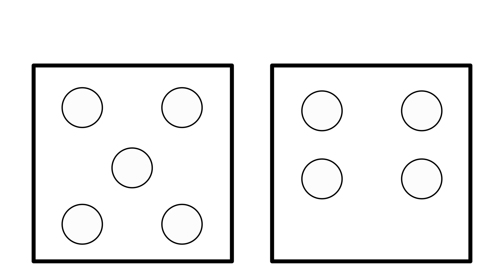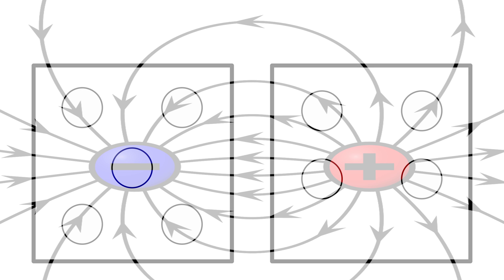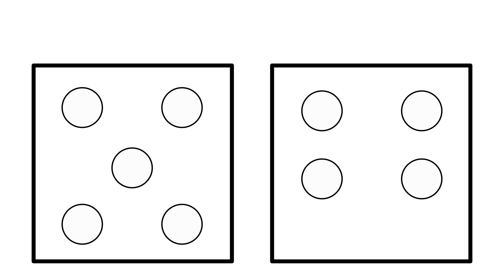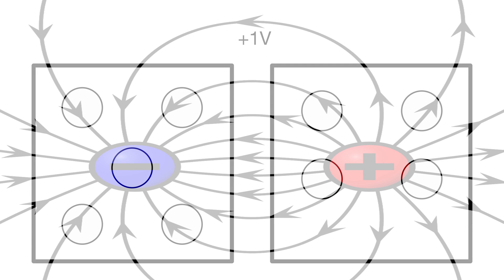Well, voltage is actually a measurement of the strength of the electric field caused by the difference in charge between these two points. For the purposes of this video, we'll call this difference a 1 volt difference. Now there is an electric field between these two points, and voltage is a measurement of the strength of this field.